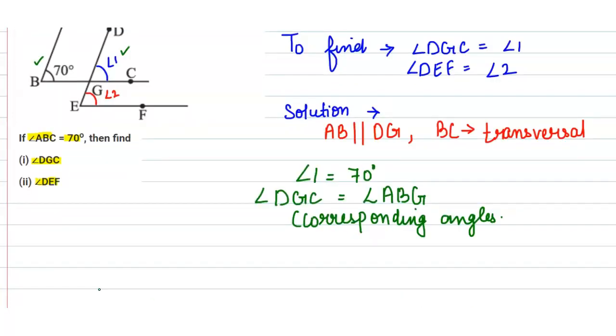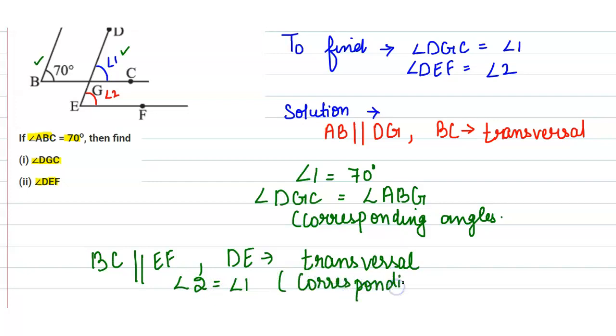Also, if our line BC is parallel to EF and DE is transversal, then in this case you can say that angle 2 is equal to angle 1, as these are corresponding angles.